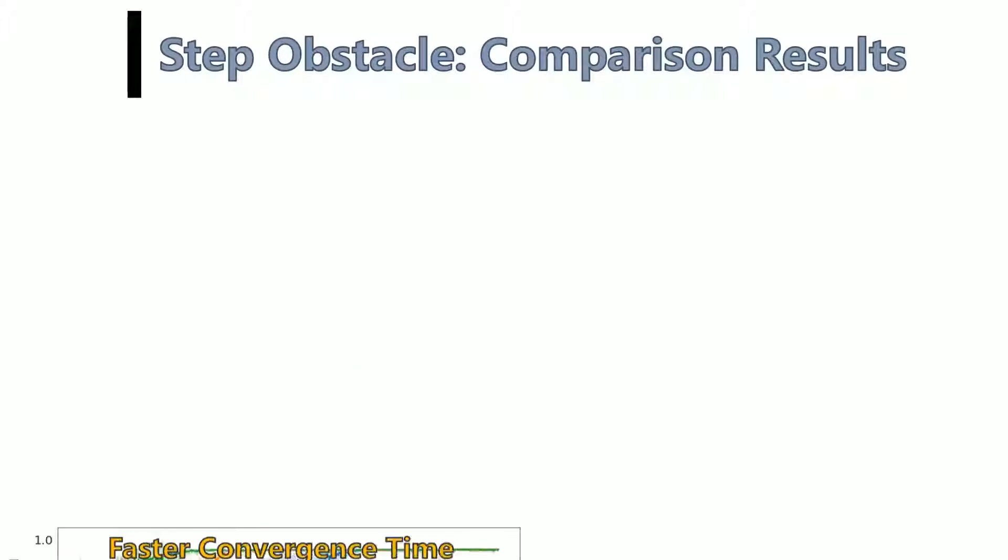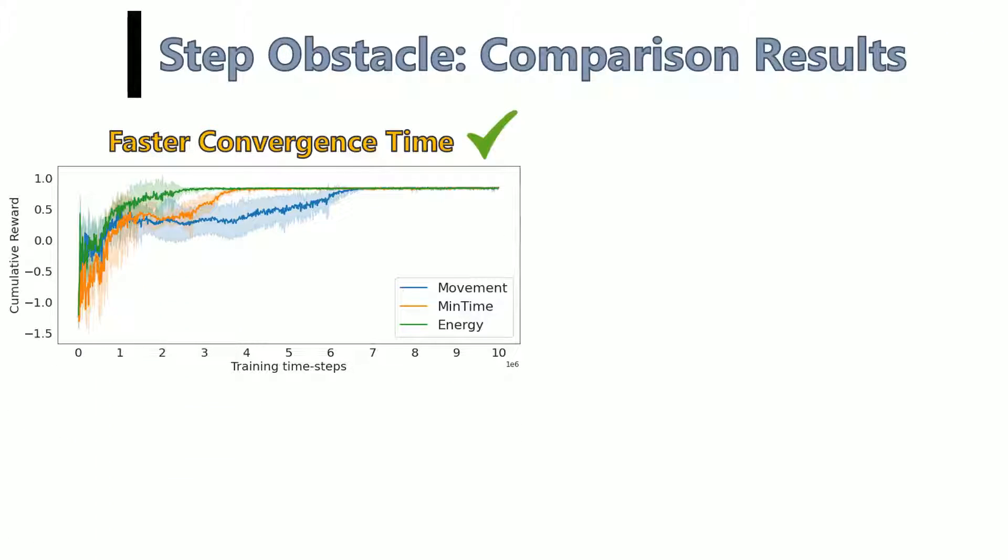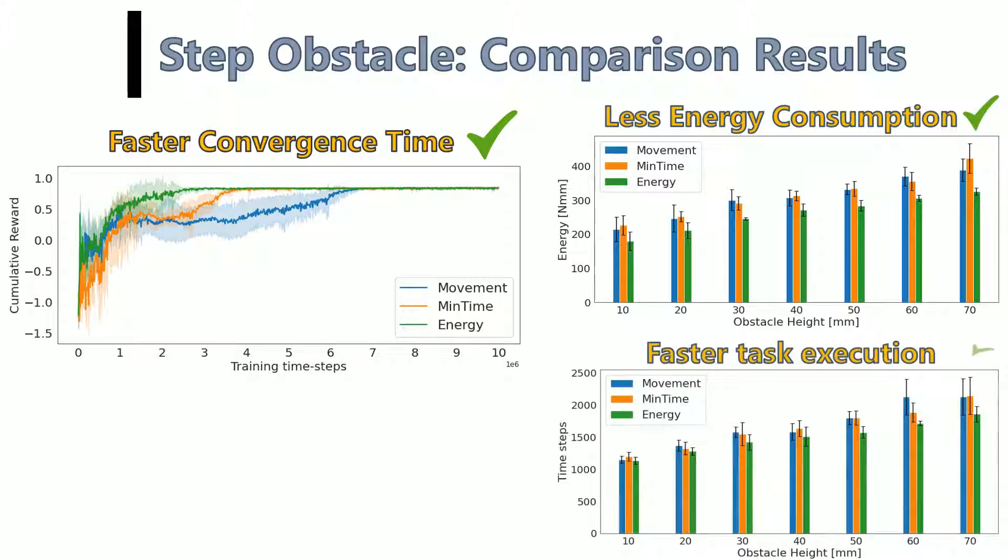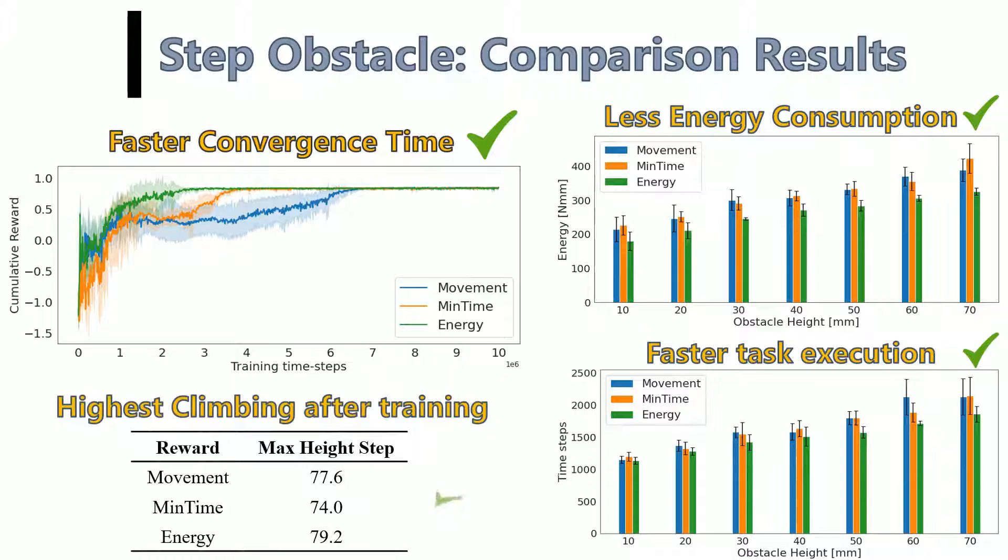We compared the energy based reward function with two alternatives: a movement based and a minimum time based reward function. The results show that the energy based reward produced superior results in terms of convergence time, energy consumption, execution time, and obstacle height.